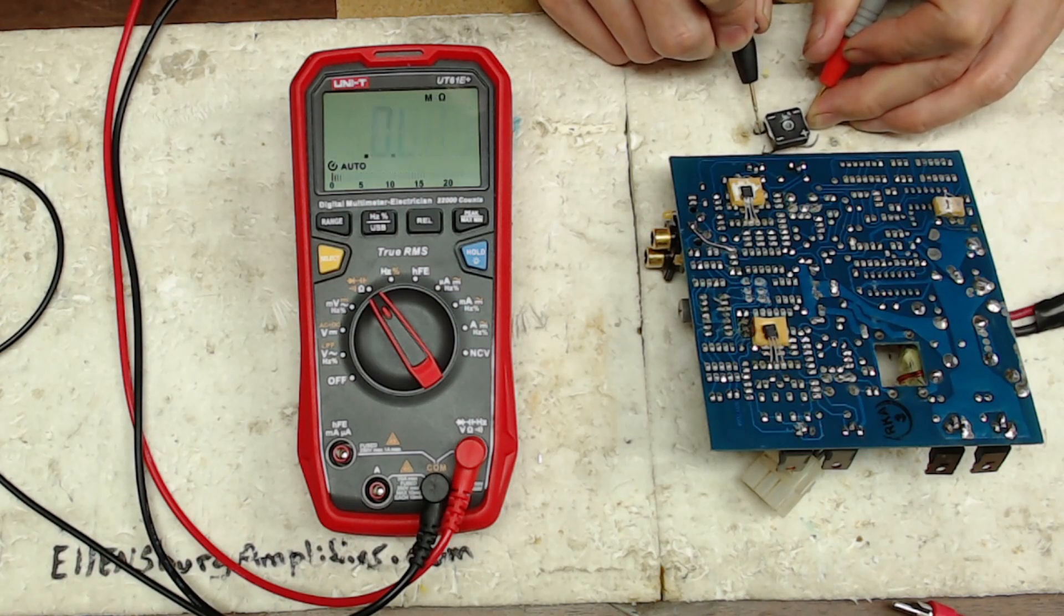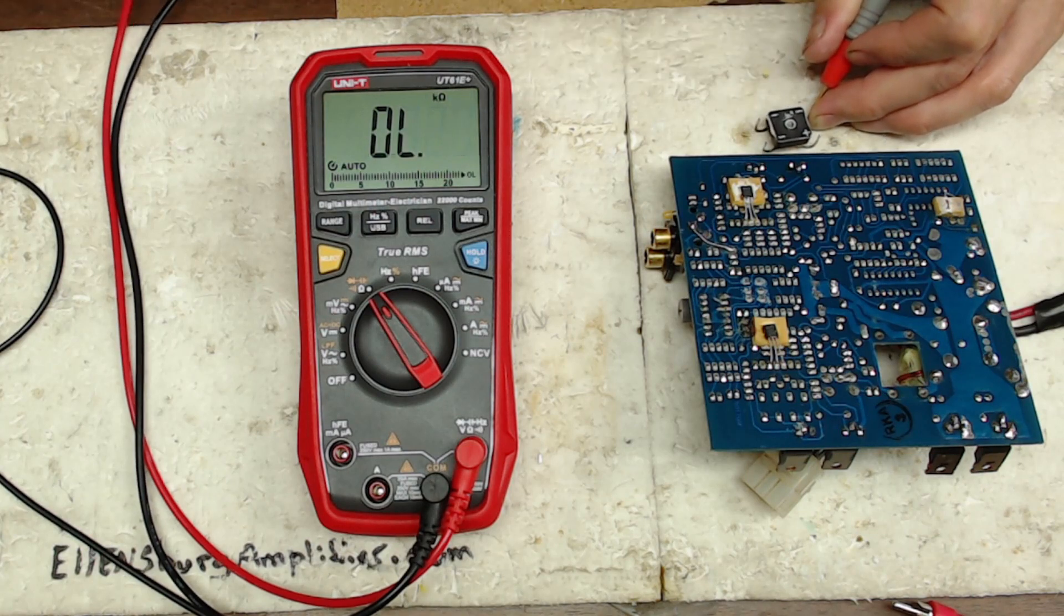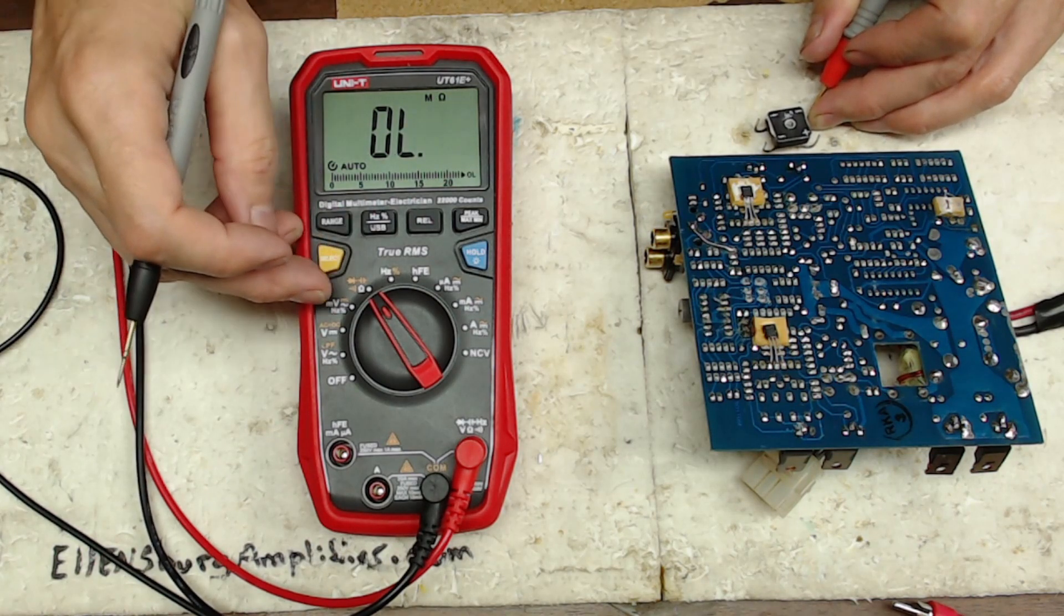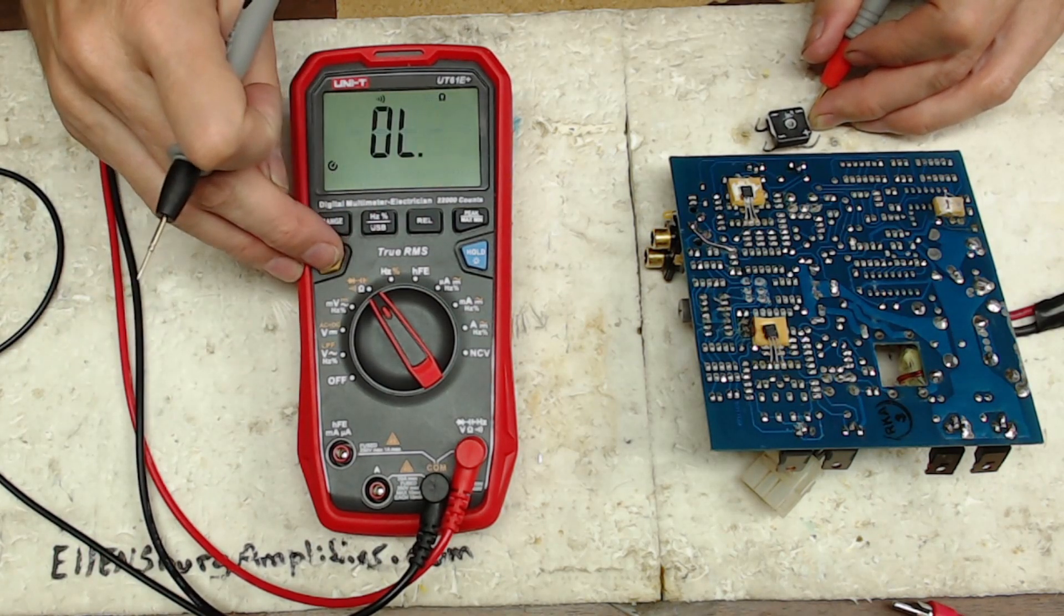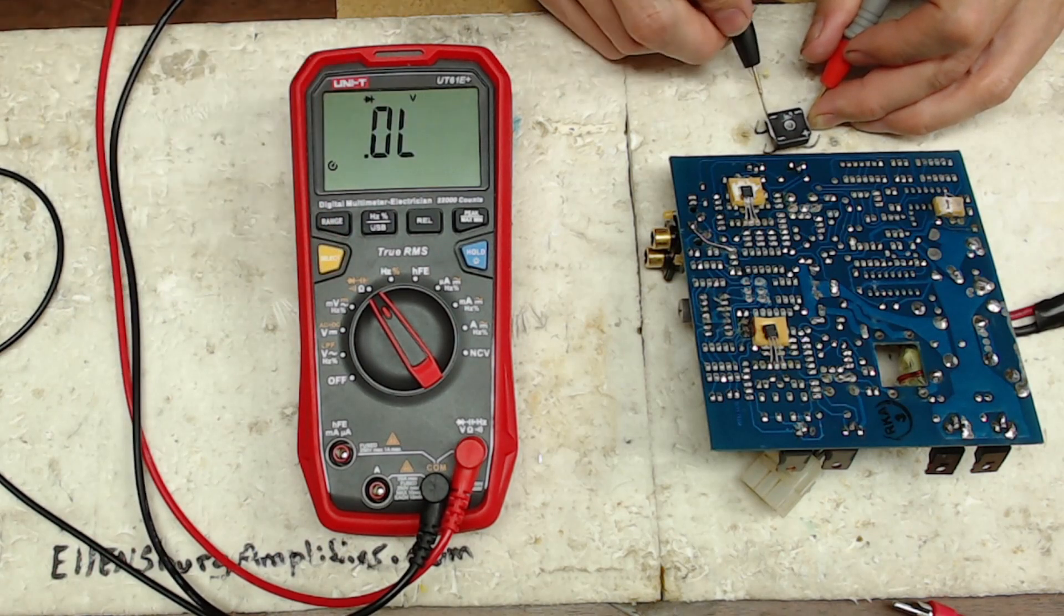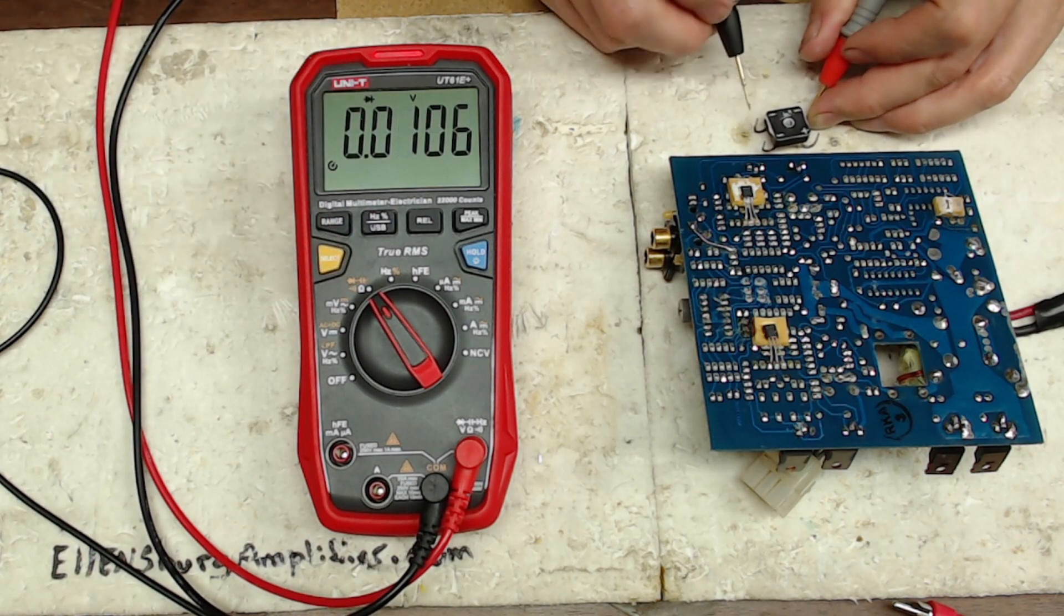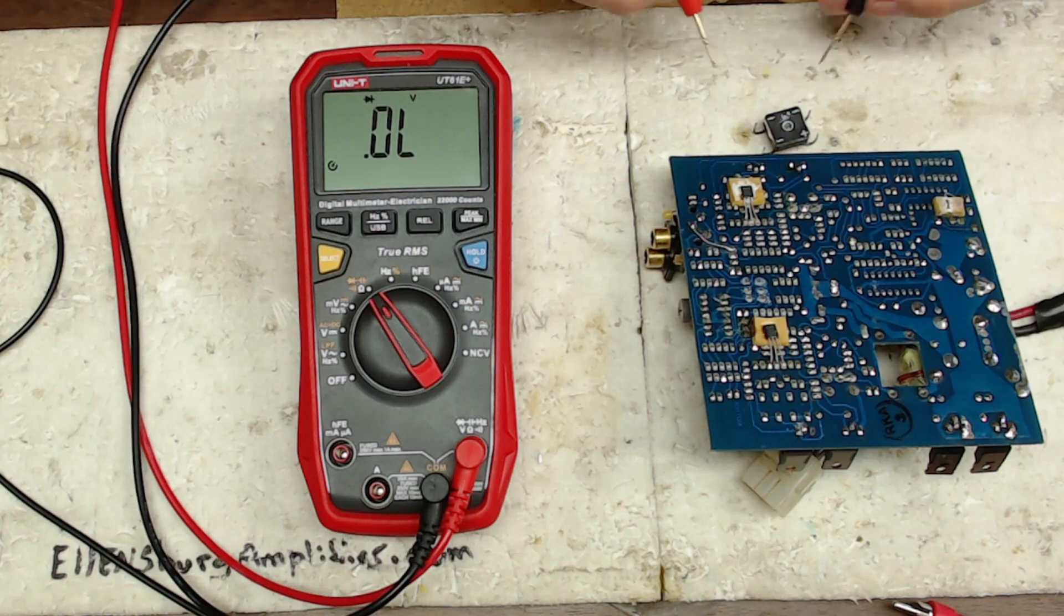It has a short across the AC input side and the negative output. So let's see what we read here in diode mode. Oh yep, 106.